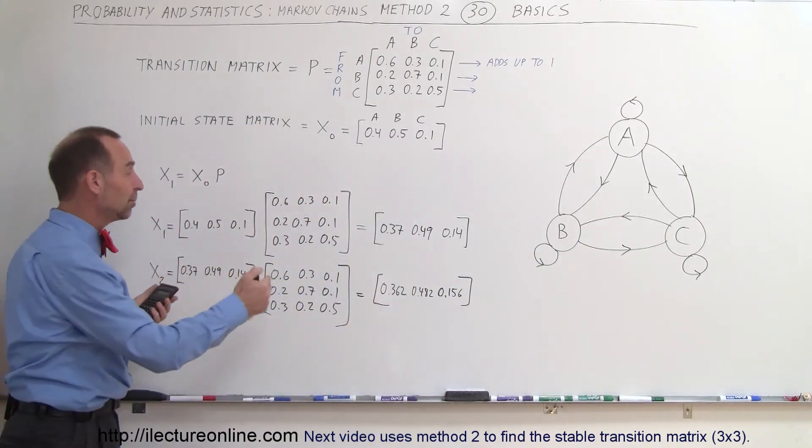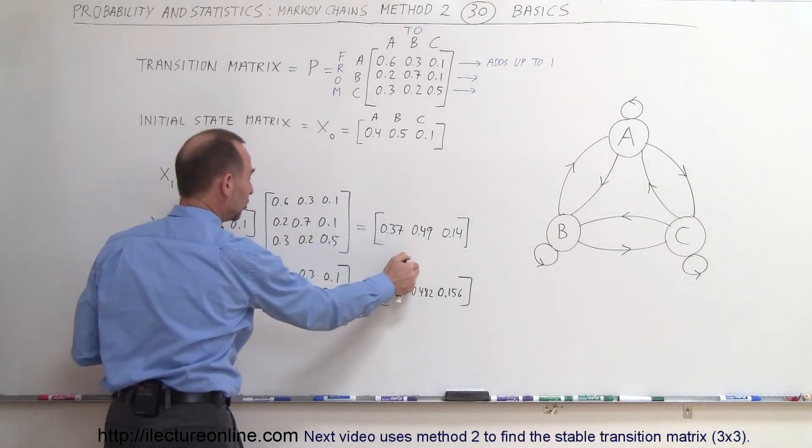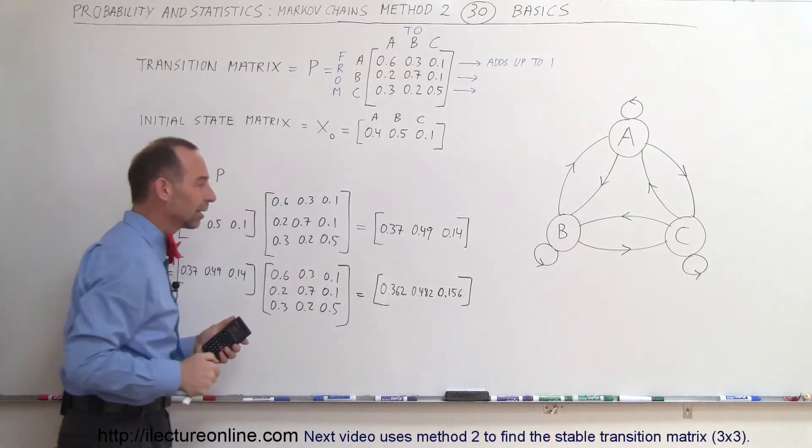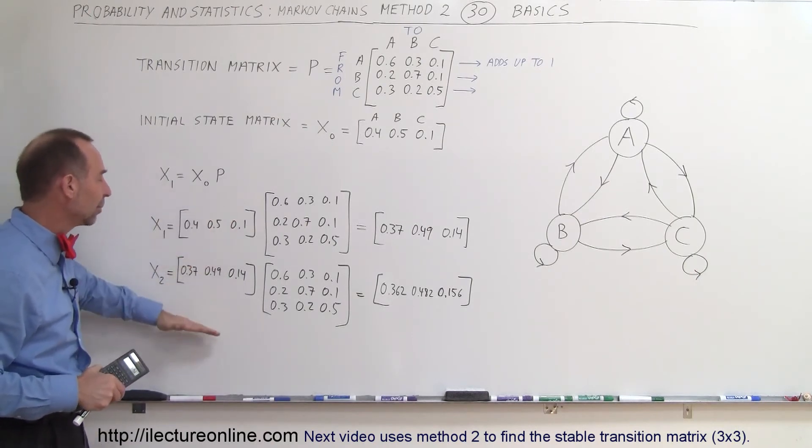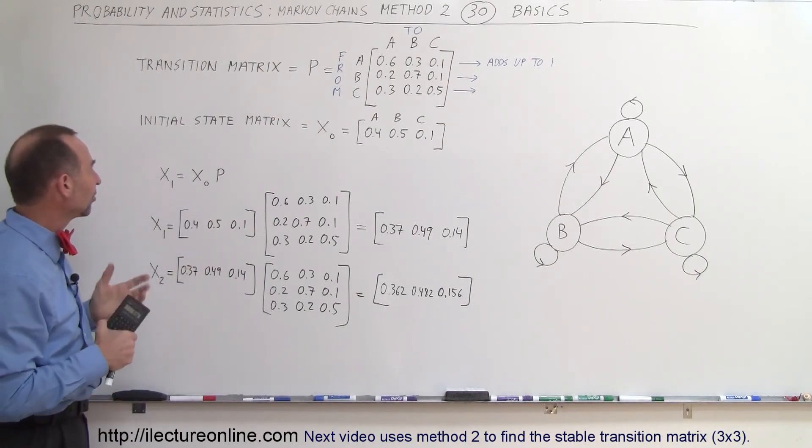And so that would be state one state two and that's how we continue calculating the subsequent states. In the next videos we'll show you how to find the stable what we call stable state matrix.